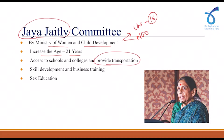The committee also recommended providing transportation facilities for girls, as many rural and remote areas lack accessibility, making it unsafe for girls to travel longer distances to school. The committee further recommended developing the skills of girls and providing business training so that they can become financially independent. Lastly, it also recommended providing sex education in schools and educational institutes.